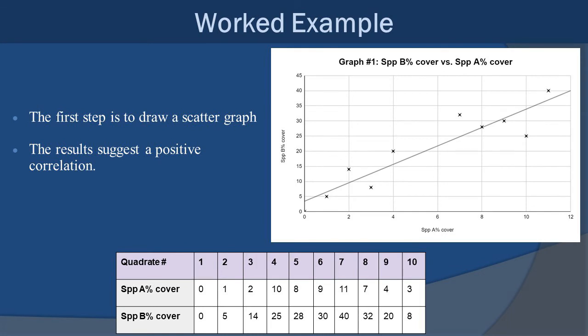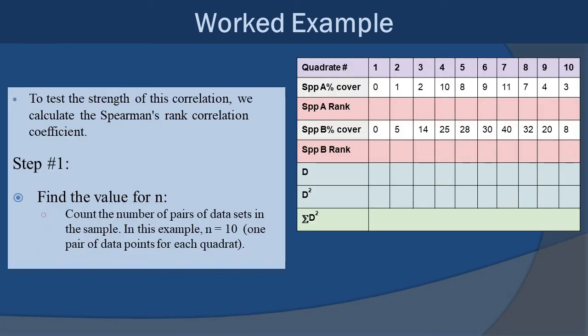Now the first step is to draw a scatter graph. And so I plugged in the data into good old Google Sheets and had it do it for me. And here is the scatter graph. And if you look at this, it's very obvious that there seems to be a positive correlation of some sort. If we were to have run this data and it was very much like chaos everywhere, very much like there's no correlation at all, then you'd probably stop there and go, okay, we don't really need to do the math on this. It's just not working. But this is a strong enough positive correlation that it's worth running the Spearman's rank correlation.